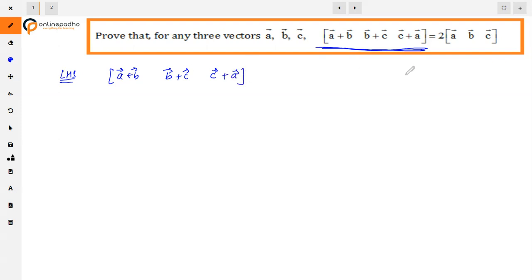Now, in the scalar triple product, we know that A, B, C, what is the relation? A dot B cross C, right? This is the cross product and the dot product. So here, this is the first vector A, this is the second vector B, and the third vector C.